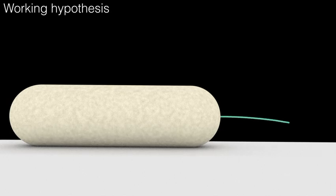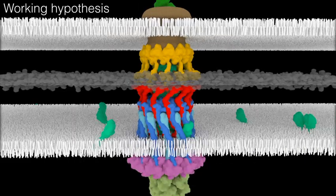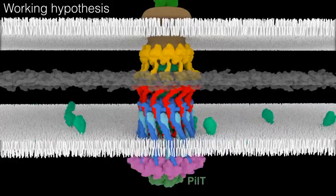After the pilus tip attaches to a surface, a tension-induced conformational change likely signals structural changes in the basal body. These changes release PilB and create a binding site for PilT, the AAA ATPase that drives retraction.